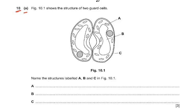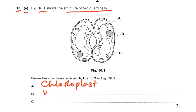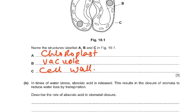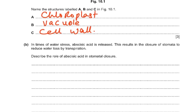Question 10A shows a structure of two guard cells in Figure 10.1 and asks you to name structures labelled A, B, and C. A is chloroplast, B is vacuole, and C is cell wall. That gives you three very easy marks.